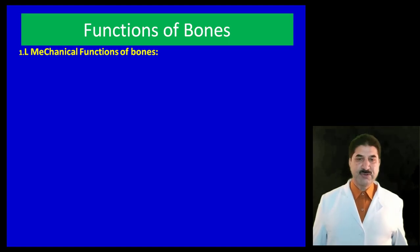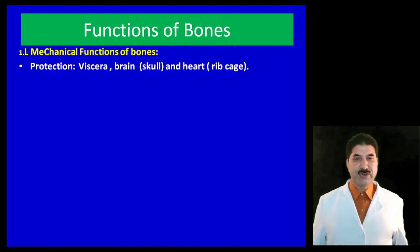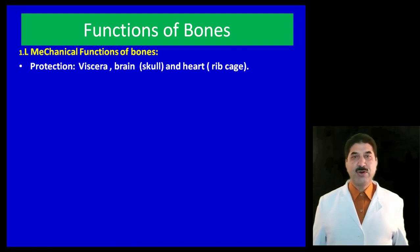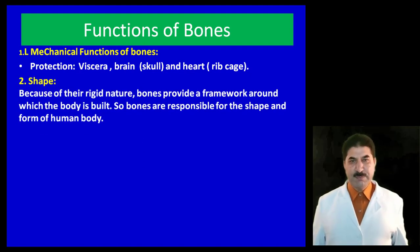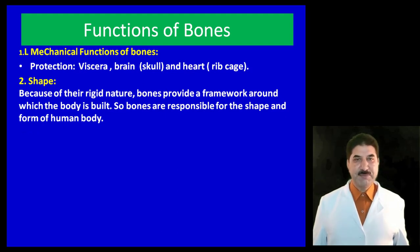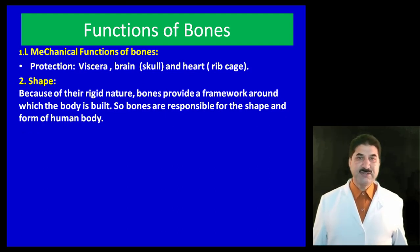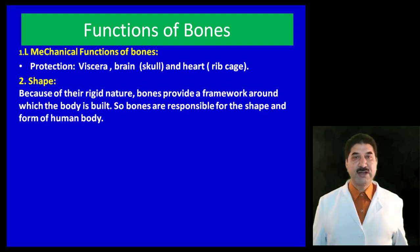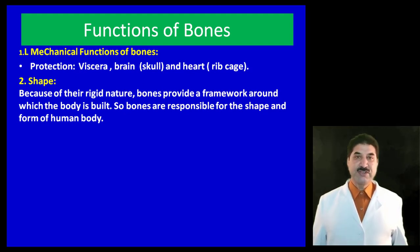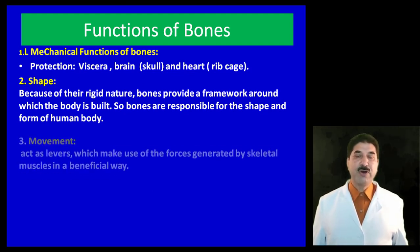What are the various functions of bones? Let us divide them into mechanical functions. Bones protect our viscera — for example, the brain is protected by the skull and the heart is protected by the rib cage. They give shape to our body; the shape of a particular part depends on the underlying structures. Being rigid in nature, bones provide a framework around which the body is built, making them responsible for the shape and form of our body.